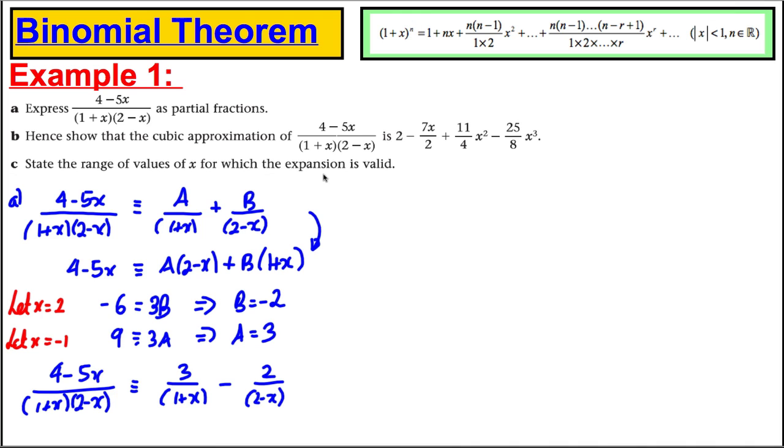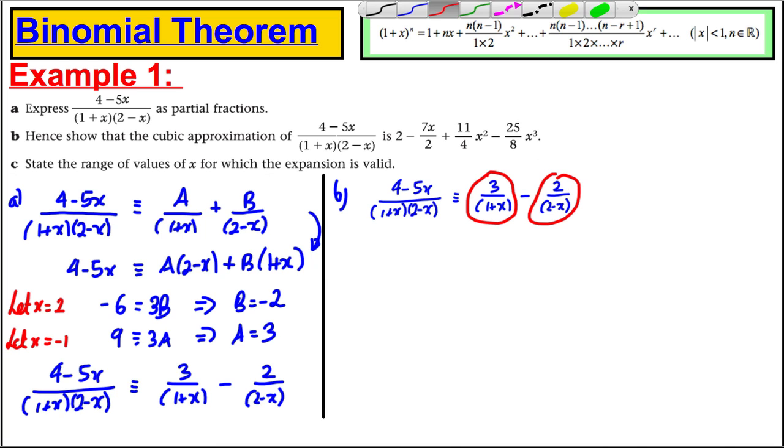Now, I'm going to keep things here so we can keep our eye on things. I'm going to do a bit of working for part B. It says, hence show that the cubic approximation of this is that. Well, what we could do is we could expand this binomially, and we could expand this binomially up to x cubes, and we could take the two expansions away, and it will equal this. So that's what we're going to try and do.